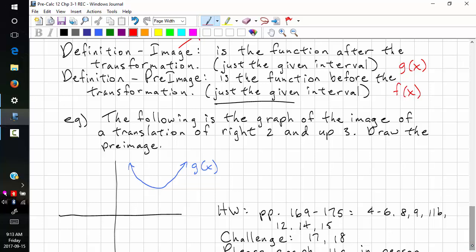Now that you have those definitions, we can look at a backwards problem. The following is the graph of the image. Always make a note on your questions of a translation of right 2 and up 3. Draw the preimage. Let's look for a key point. Those are just grid points. This is a key point.